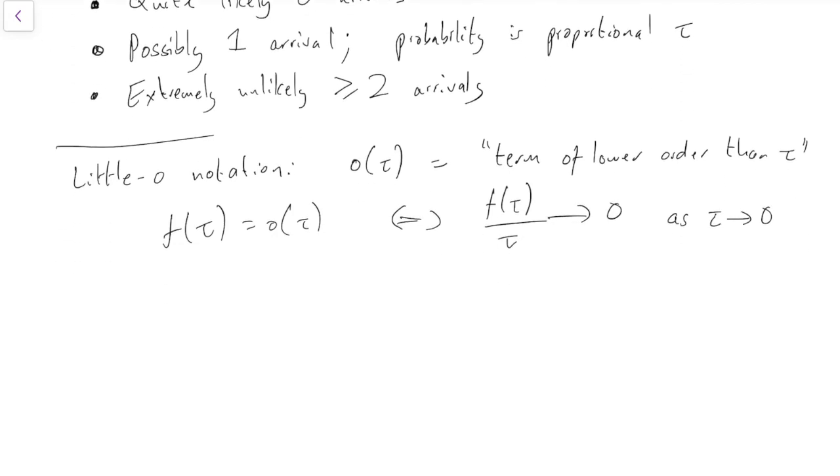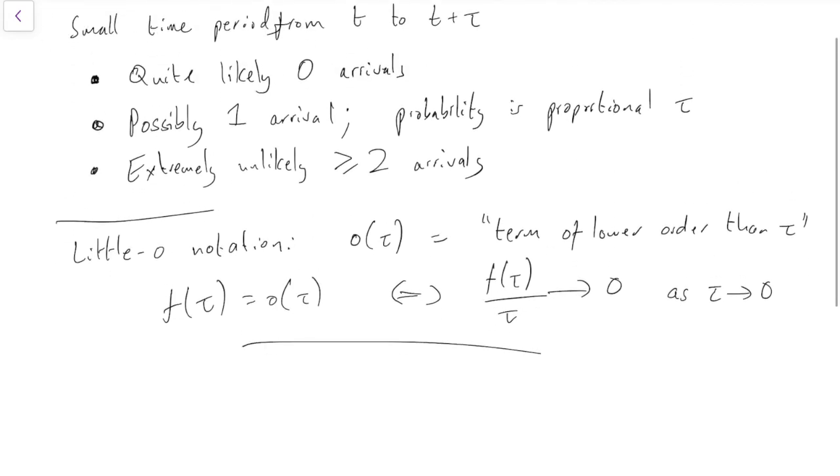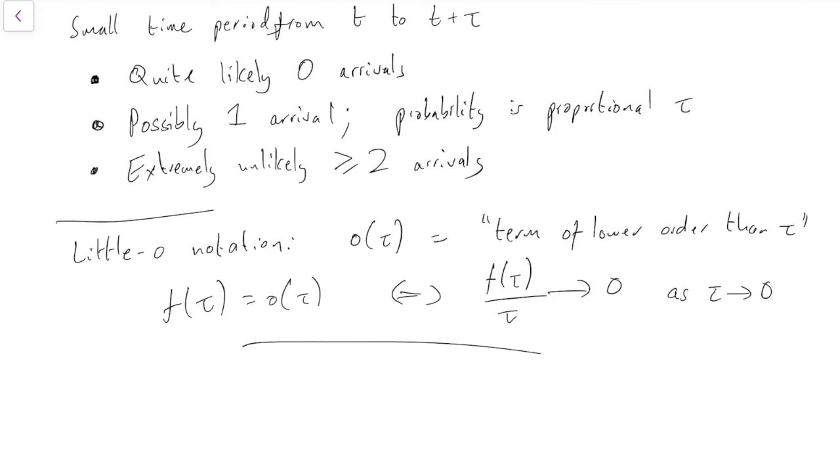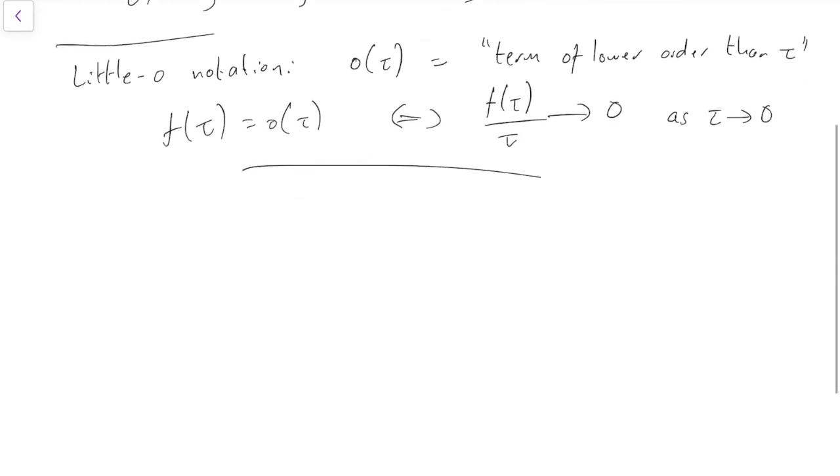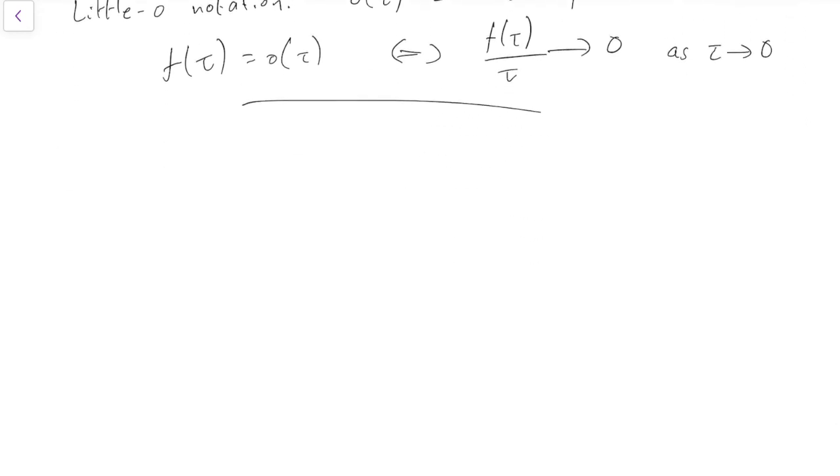So armed with little o notation, we can write these three bullet points we have at the top in maths. So we're looking at how many arrivals come in a period of time little tau. So probability X(t + tau) minus X(t). Right, those are the number of arrivals between t and t plus tau just a little bit later. And what's the probability it's j?